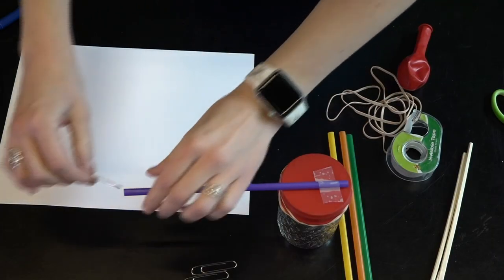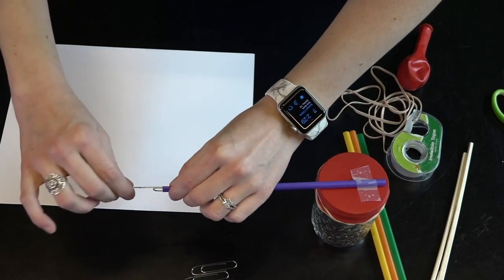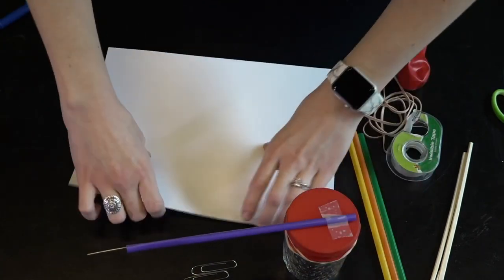Now to use our paper clip we'll unwind it and stick it into the open end of the straw. This will help us get a more precise reading on our barometer.